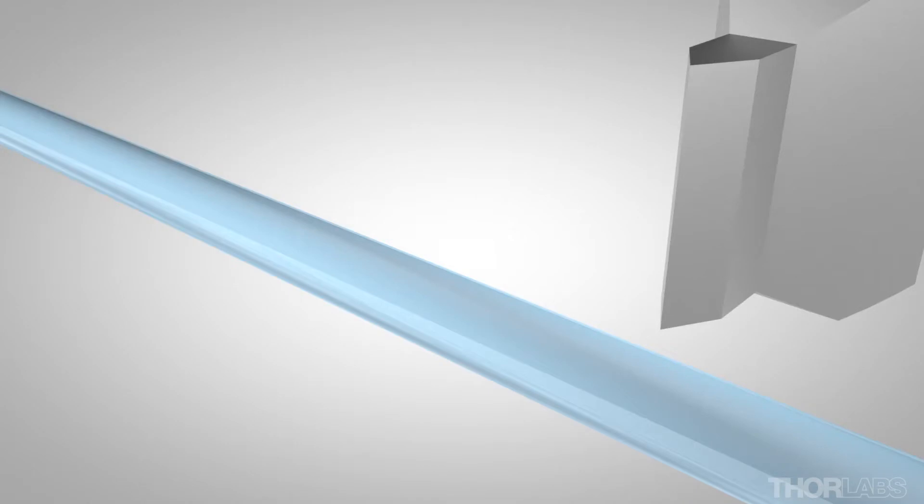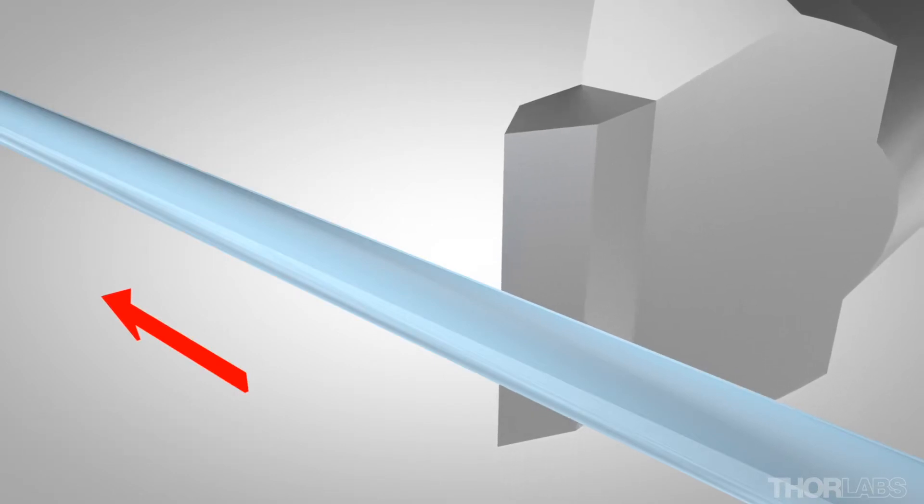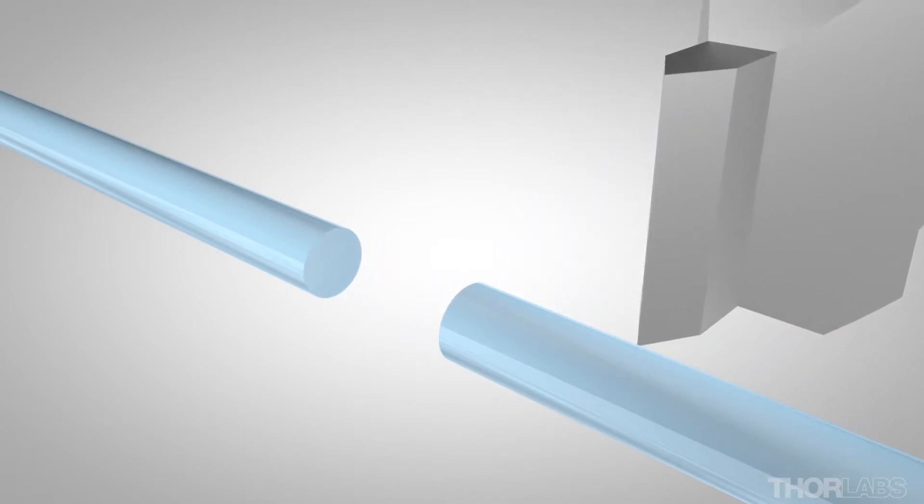For a flat cleave, the tension and scribe method places the fiber under a known tension. The cleave blade then moves gradually forwards in a pecking motion until the blade just strikes the fiber. This causes a scribe mark on the fiber surface. The fiber tension then causes this scribe mark to propagate over the cross section of the fiber and creates the cleave.